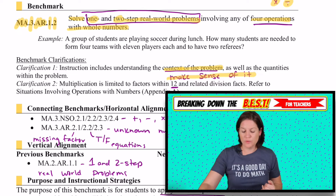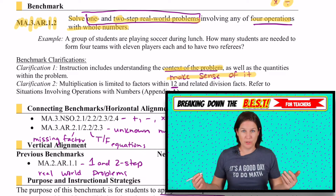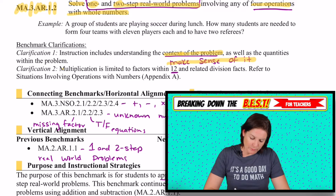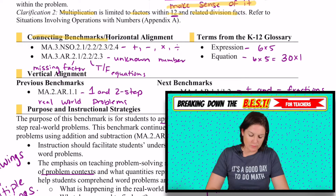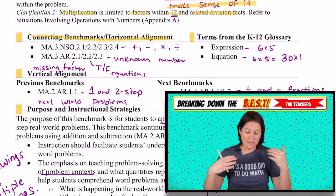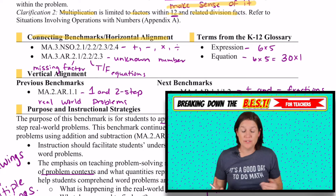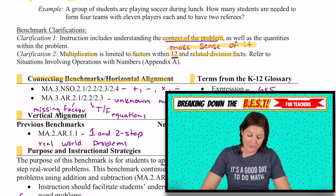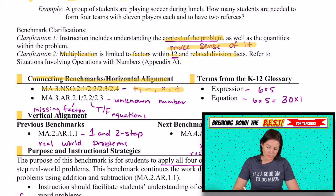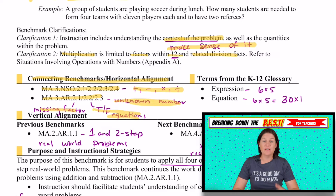So it's really paying attention to the context of the problem to determine what's going on. We need to make sure that multiplication is limited to factors within 12 and also those related division facts. The connecting benchmarks in the horizontal alignment — other third-grade standards that connect — include the NSO standards doing a whole bunch of adding, subtracting, multiplying, and dividing, and also the AR standards with missing factor problems, true-false equations (2.2), and unknown number problems (2.3).